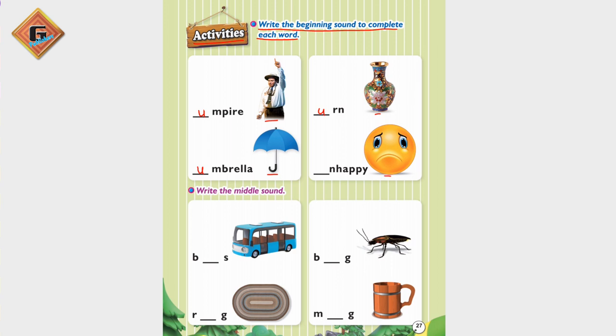And here we will write U. Now let's see what the first sound is. U umpire, U umbrella, U urn, U unhappy. So this way you will write all these sounds. You will write U. The next one is write the middle sound.